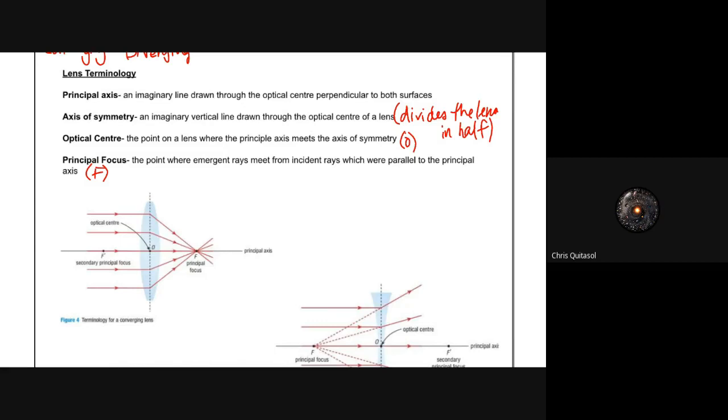It divides the lens in half. The optical center is the center point at which the principal axis meets the axis of symmetry. The principal focus is the point where the emergent rays—the rays that go through the lens—meet from the incident rays which were parallel to the principal axis.